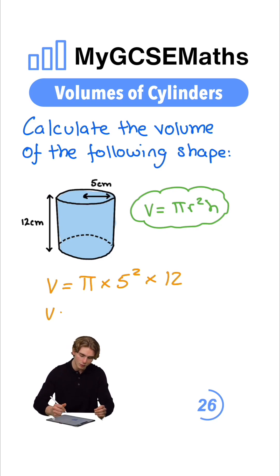Now, simplifying this, 5 squared is 25. 25 times 12 is 300, so we can write this as 300π.